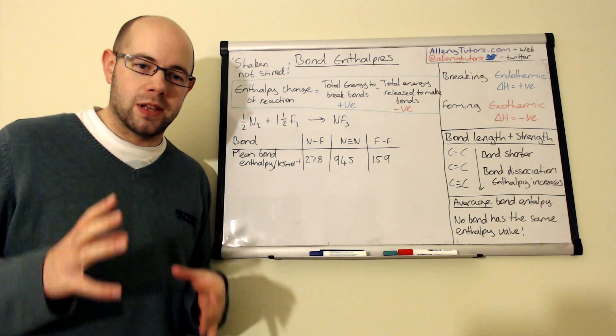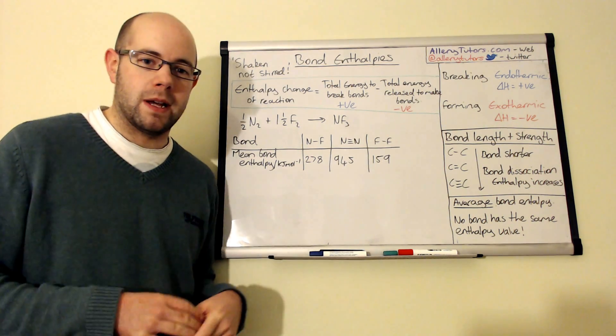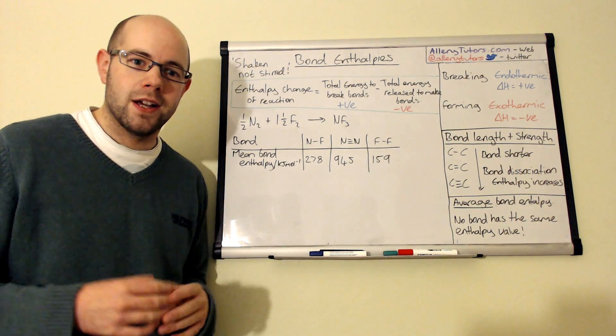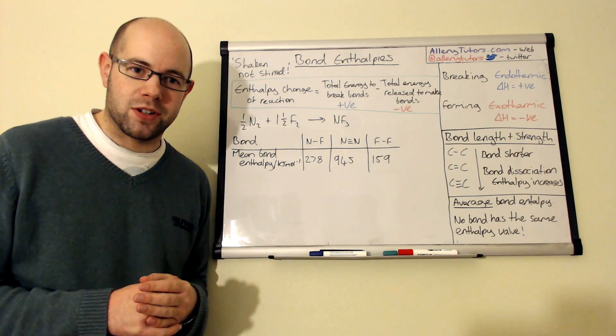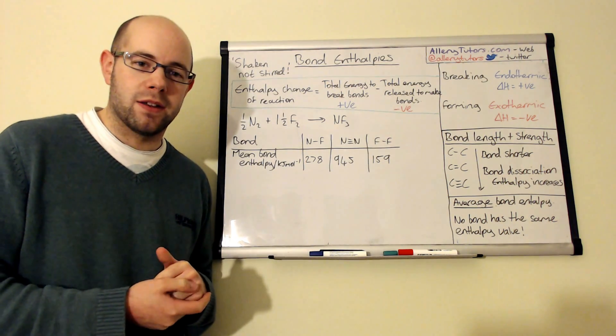We're going to look at the length of the bond and how that's affected by its strength. We're also going to do a quick calculation which is a typical chemistry question that they could have in an exam. So we're going to start with what we mean by a bond enthalpy.